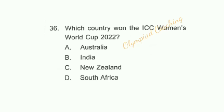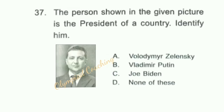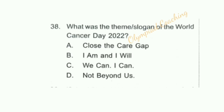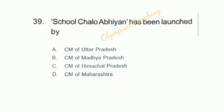Question number 36: Which country won the ICC Women's World Cup 2022? Option A is correct. Question number 37: The person shown in the given picture is the president of a country — identify him. Option A is correct. Question number 38: What was the theme or slogan of World Cancer Day 2022? Option A is correct — Chief Minister of Uttar Pradesh, Yogi Adityanath.